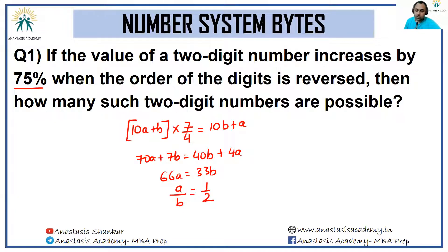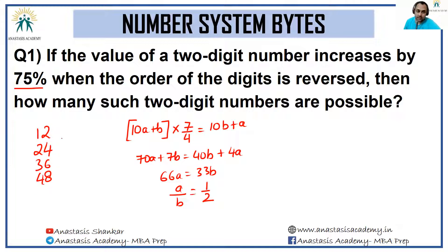So a/b = 1/2. The leading digit and the units digit should be in ratio 1:2. The possible cases are 12, 24, 36, and 48. Beyond this we cannot go because 10 is not a single digit, so the answer to this question is 4.